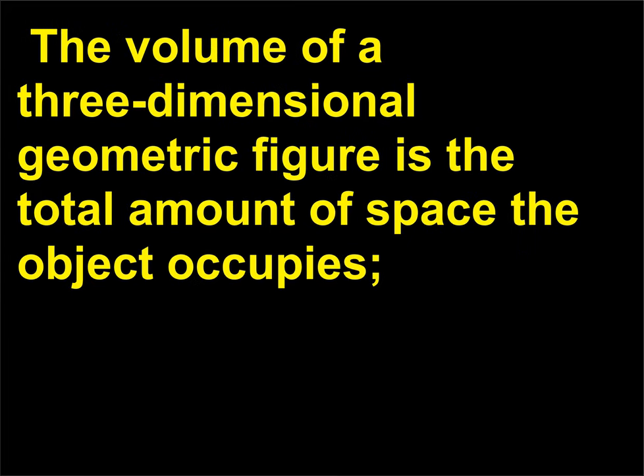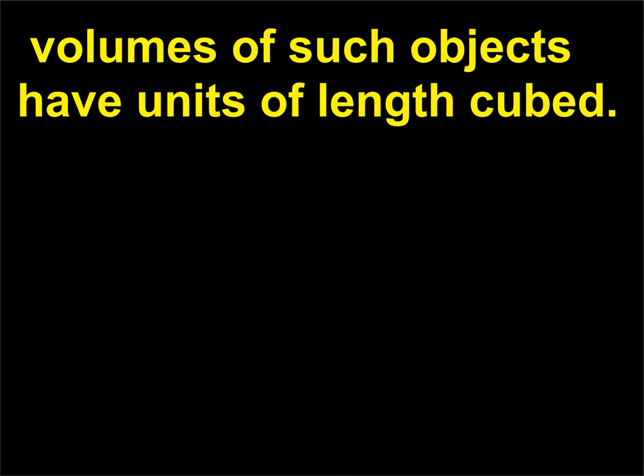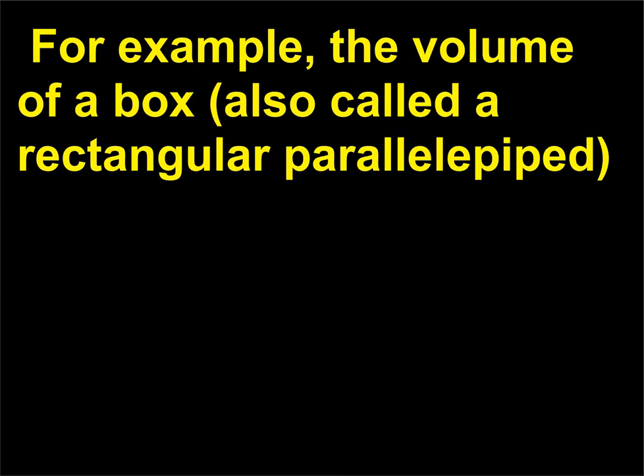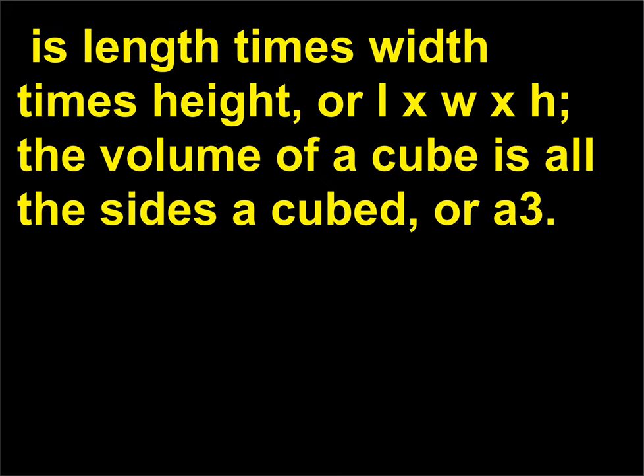The volume of a three-dimensional geometric figure is the total amount of space the object occupies. Volumes of such objects have units of length cubed. For example, the volume of a box, also called a rectangular parallelepiped, is length times width times height, or L×W×H. The volume of a cube is all the sides a cubed, or a³.